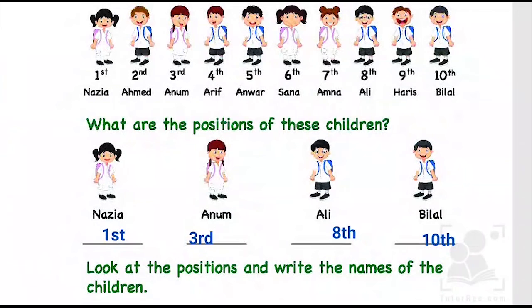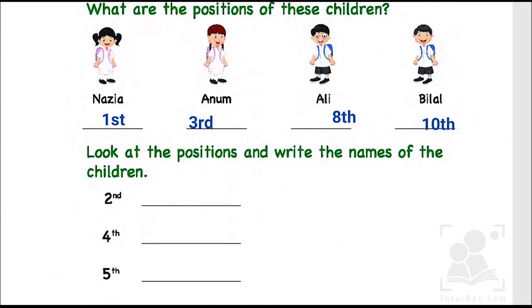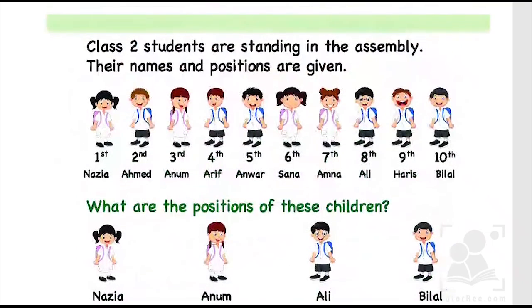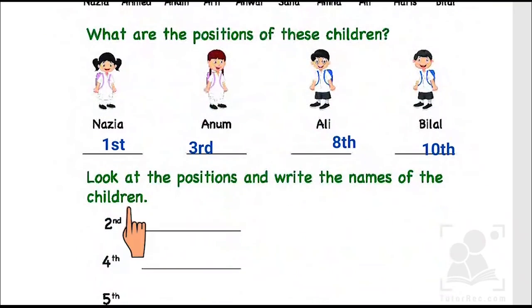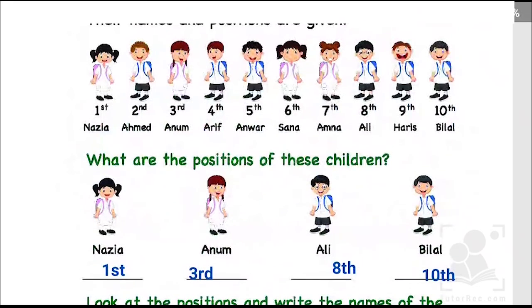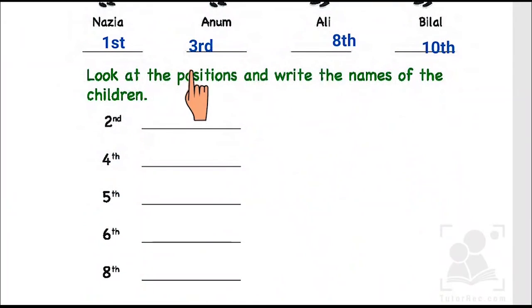So kids, this is how we find the positions of objects by stating them as ordinal numbers. The next exercise you have to do on your own — this is very exciting and fun! You have to look at the positions and write the names of the children. For example, at the second position, who is there? Ahmad. So you have to write the name of the kid over here.